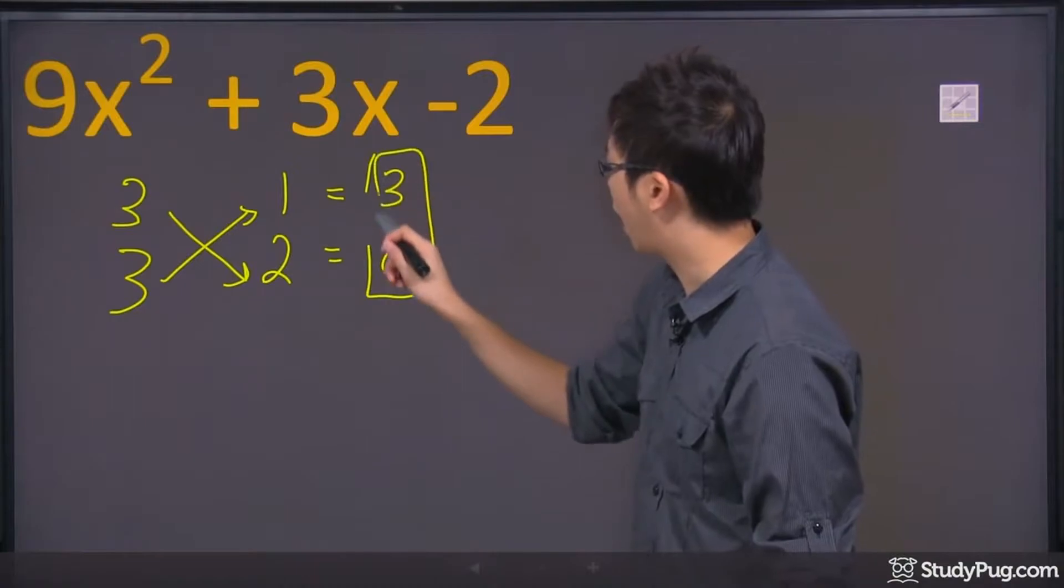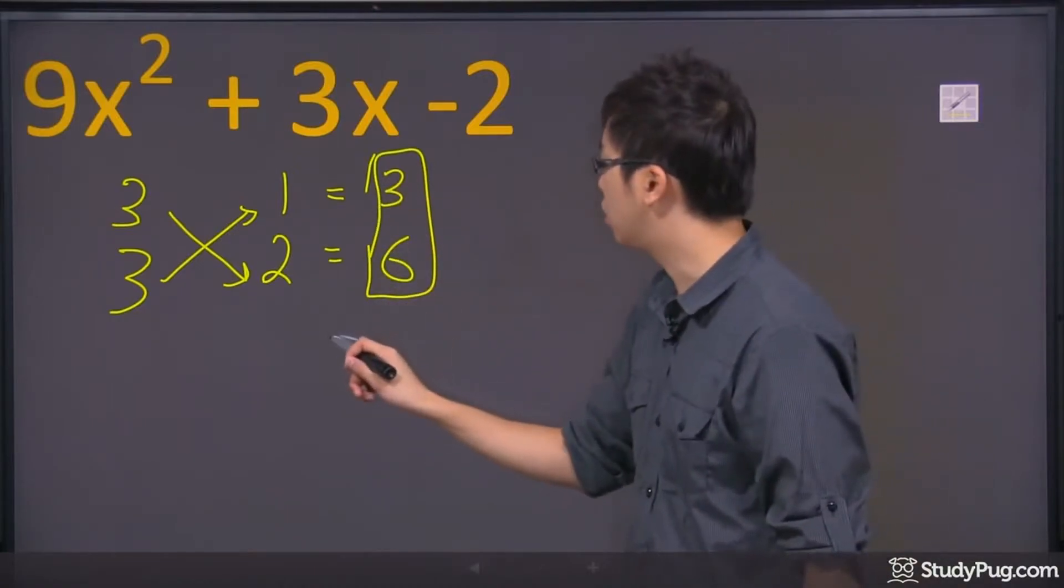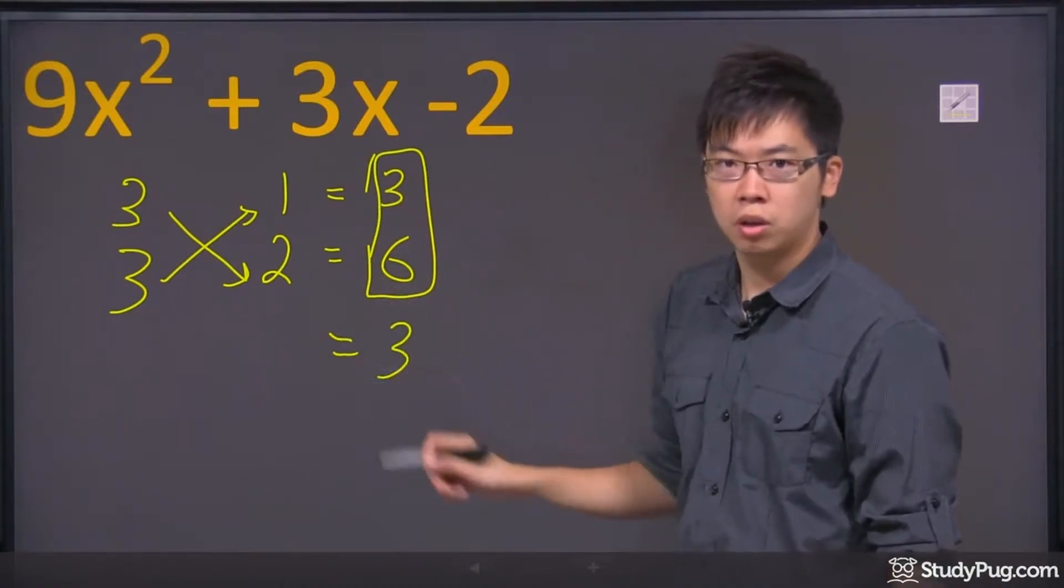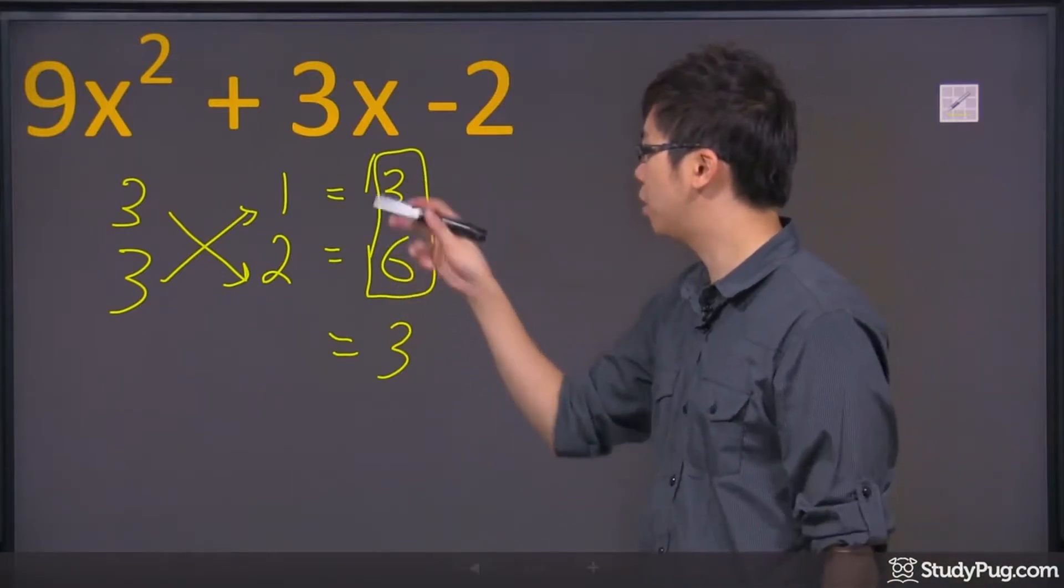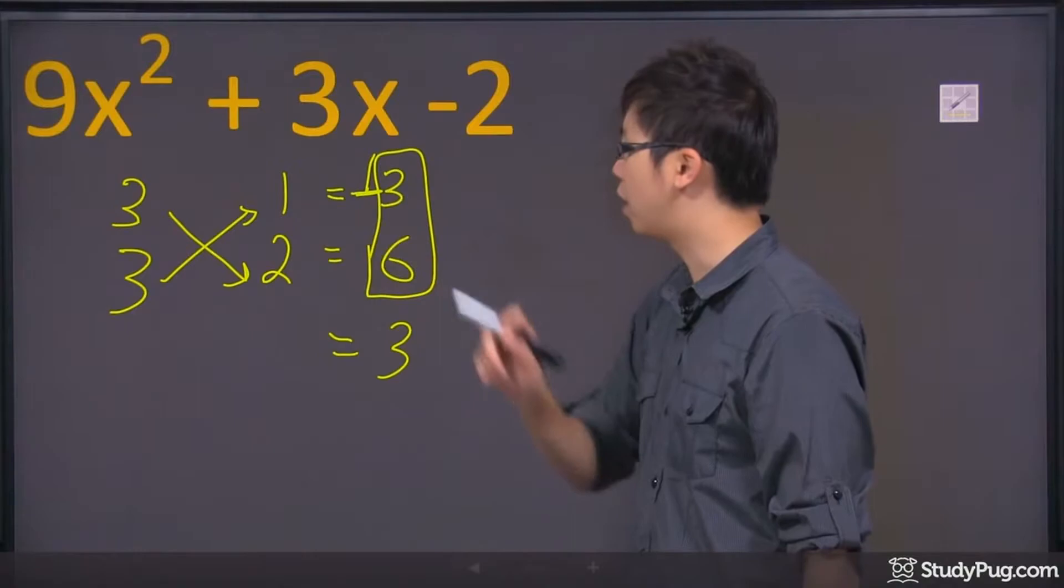These two numbers here, you have to add them up to get you a positive 3. So what that means is this must be a 6 positive and this one here must be a negative, a negative 3.